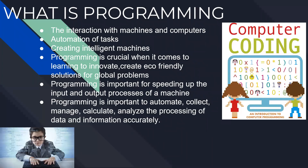Programming is the interaction with machines and computers — telling them what to do, what not to do, and how to do specific tasks. It also enables automation of tasks. For example, we now have Roombas automating our cleaning tasks, and there are programs running that enable these automations.